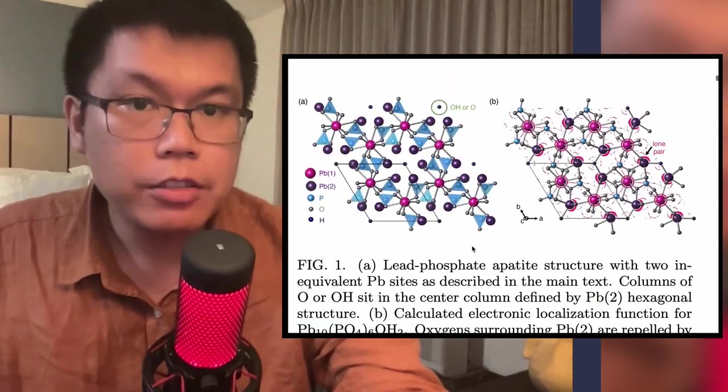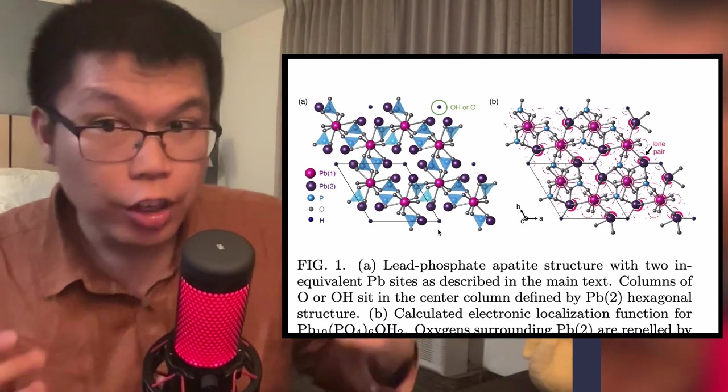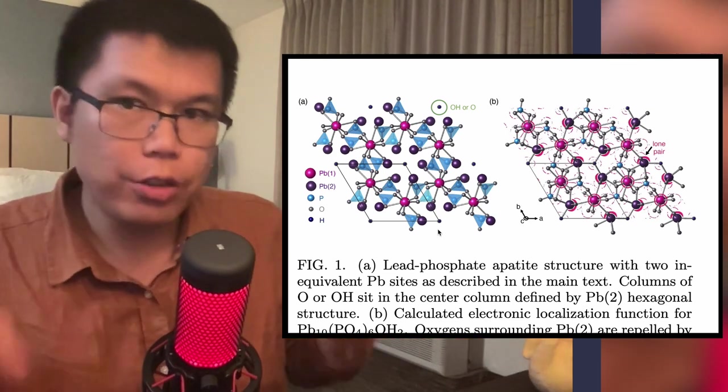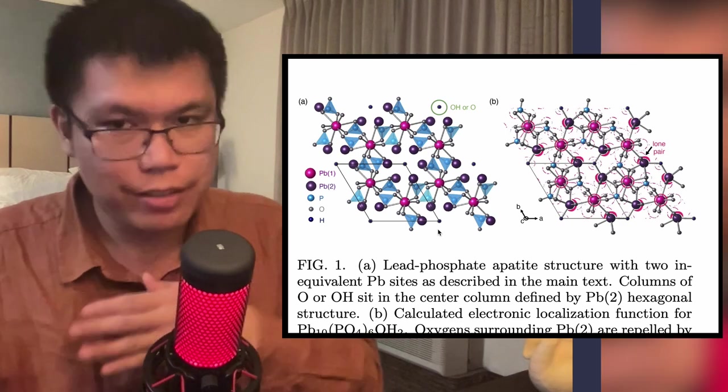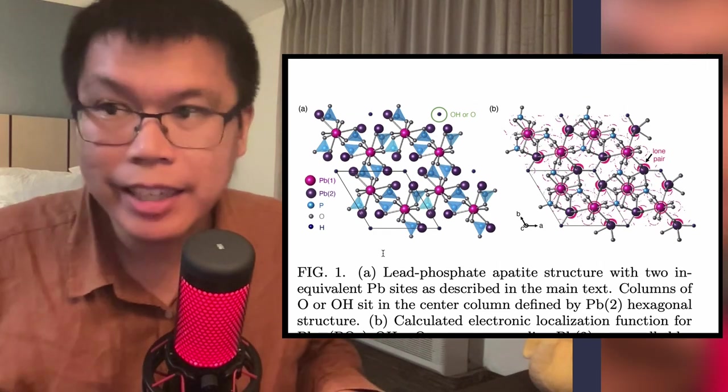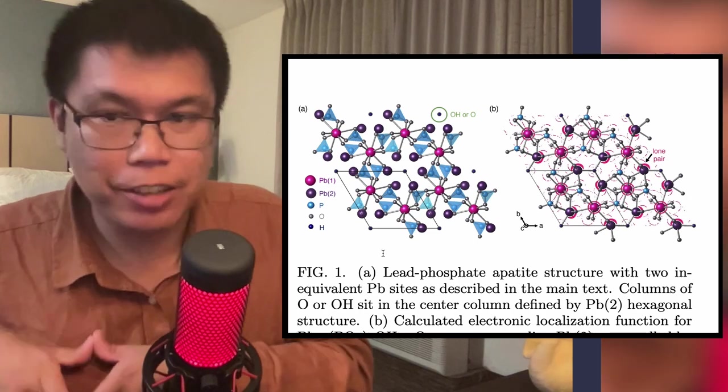So that's what's done in this paper. Basically, this paper takes a material structure, which they interpret by looking at the x-ray diffraction data shown in the initial paper. Basically, what the previous paper said is that this material has a hexagonal structure.